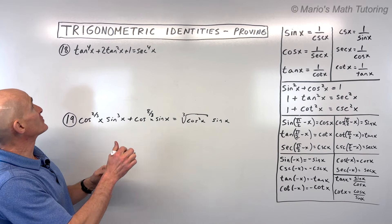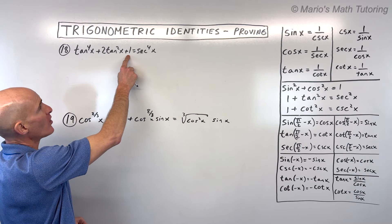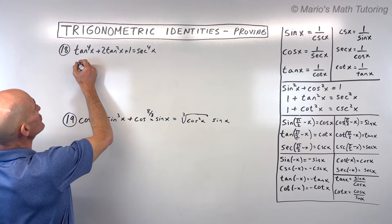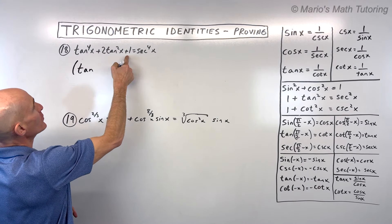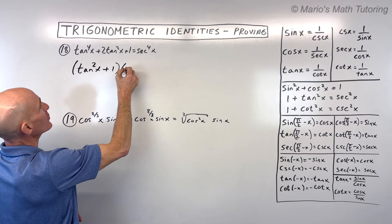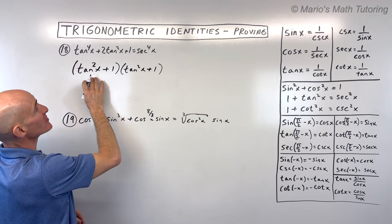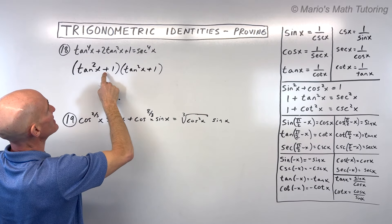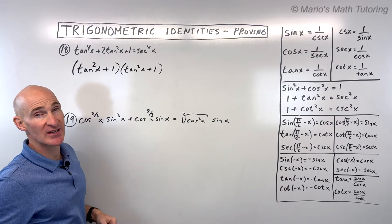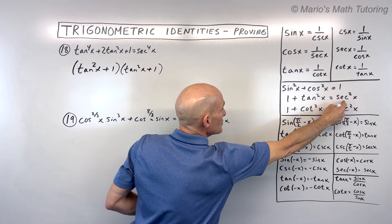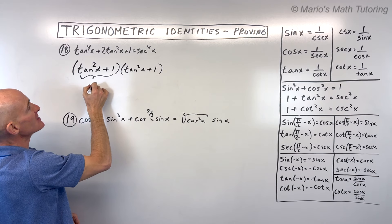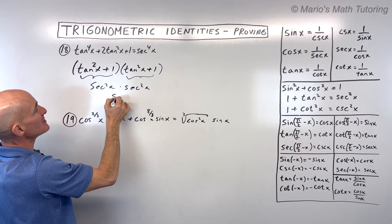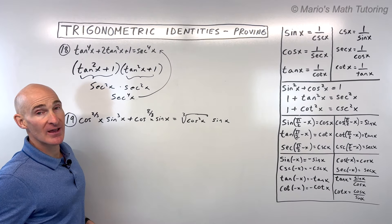Example 18: tangent to the fourth x plus 2 tangent squared x plus 1 — show it equals secant to the fourth x. Factor the trinomial as (tangent squared x + 1)(tangent squared x + 1). Since 1 + tangent squared x equals secant squared x, each factor is secant squared x. Secant squared times secant squared is secant to the fourth x. Proved.